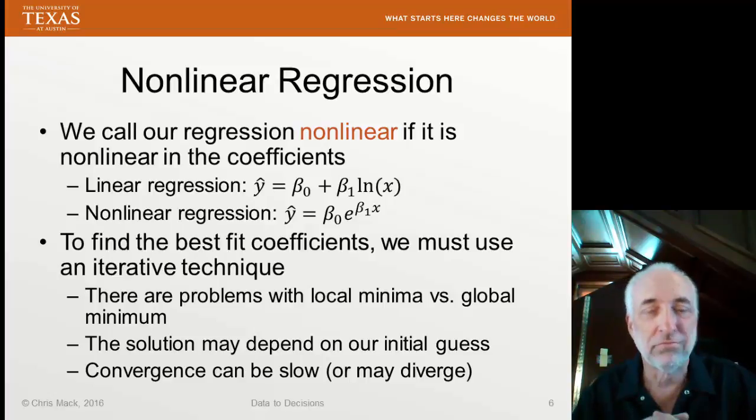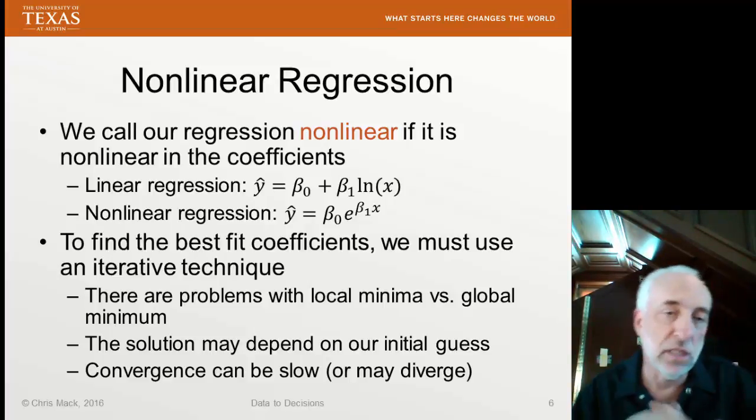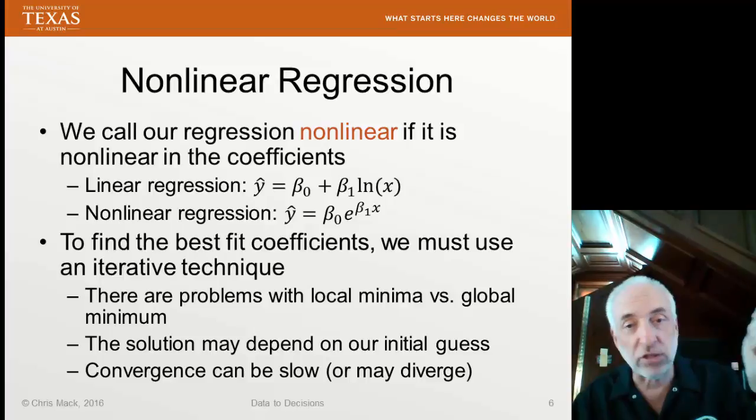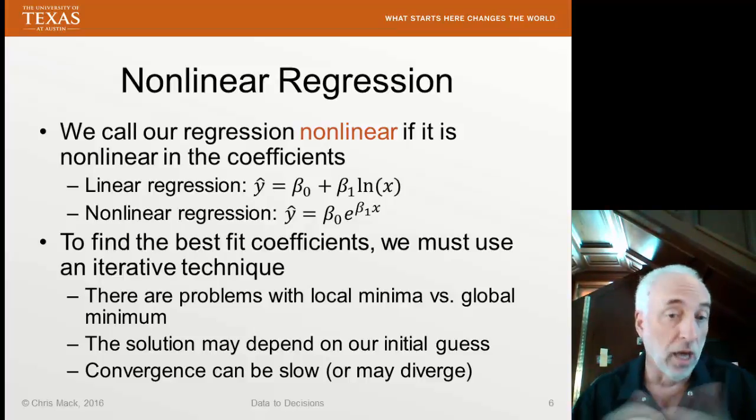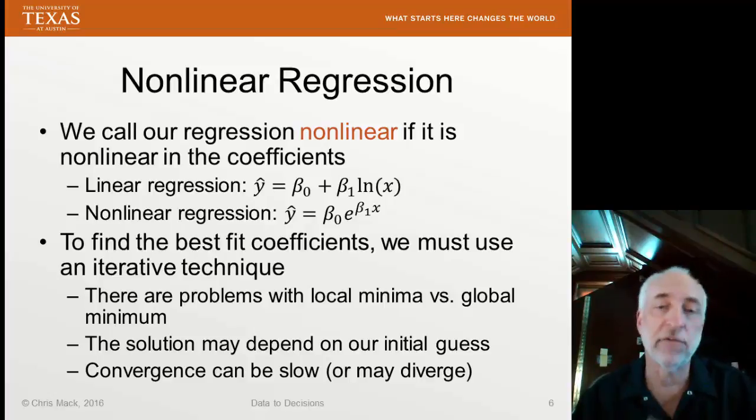How can we find the best fit coefficients for a model like this? We have to use some special iterative techniques to find the best fit coefficients. This produces problems. In particular, it produces a problem of the difference between local minima and global minima. If we're trying to minimize the sum of the squares of the residuals, we might find a local minima that's not a global minima. Sometimes, because of this, the solution depends on our initial guess. We start with a guess and we iterate until we find what we think is the best. But the convergence towards that best can be slow. And, in fact, it may not converge at all if we're not careful.